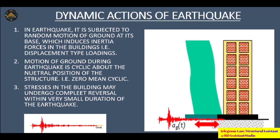Sometimes a complete cycle may occur, where the shape changes back and forth. As we know, the motion of the ground is cyclic. This is basically the behavior under earthquake forces — the stress in the building may also undergo complete reversal. For example, a column having compression under dead load and live load may experience tension under the effect of earthquake.